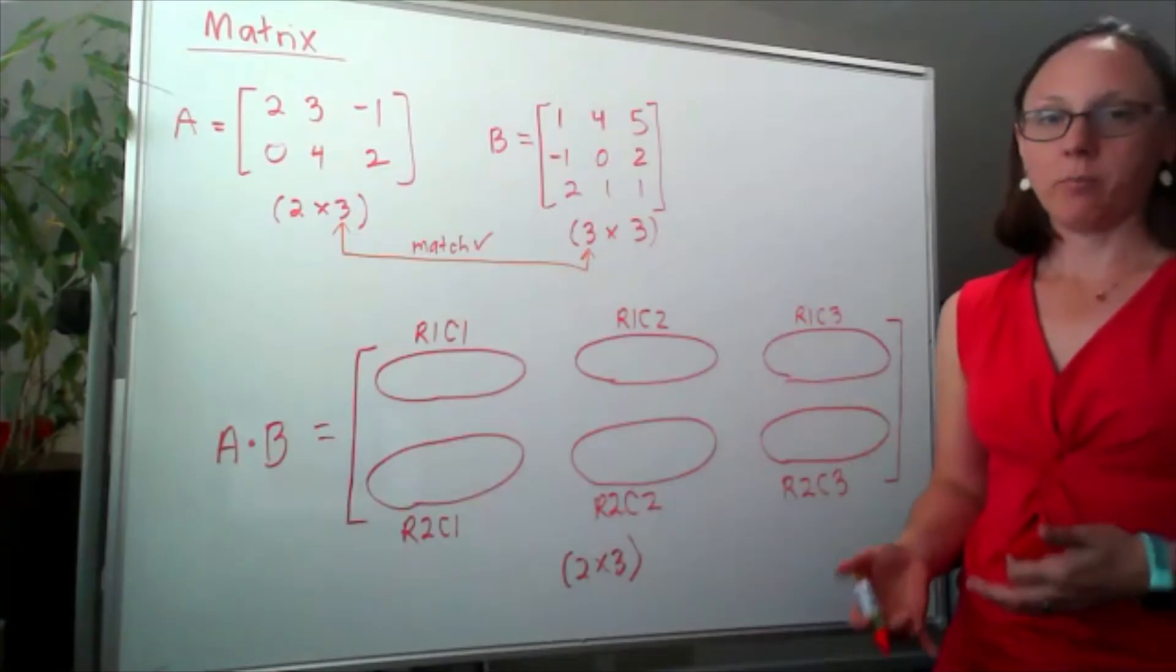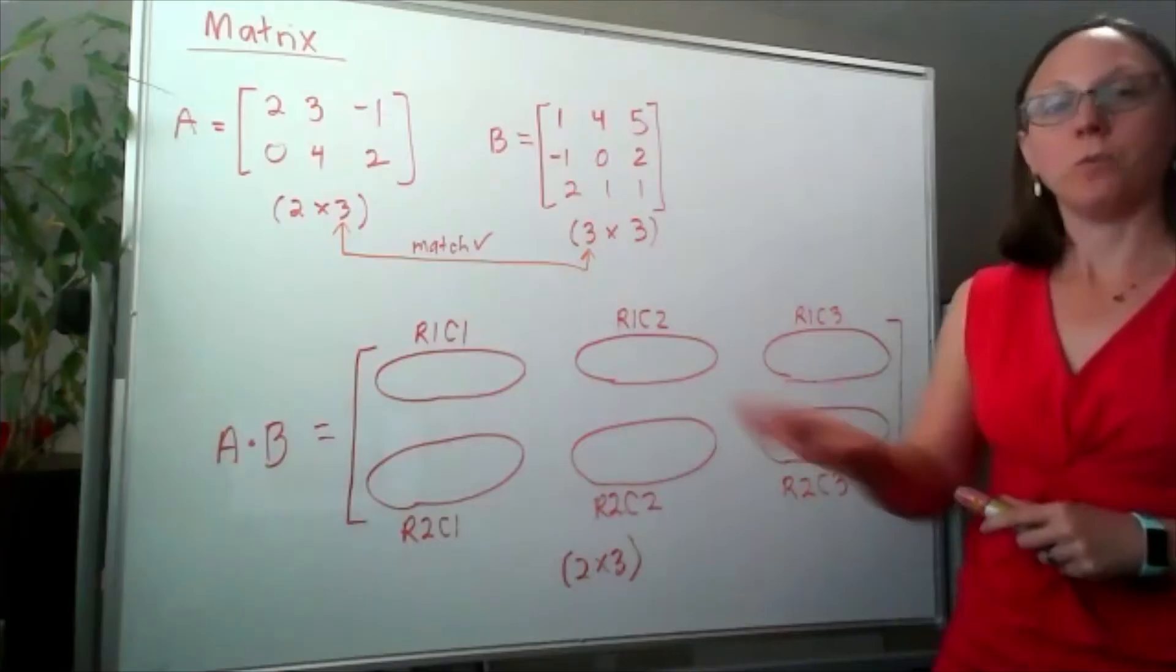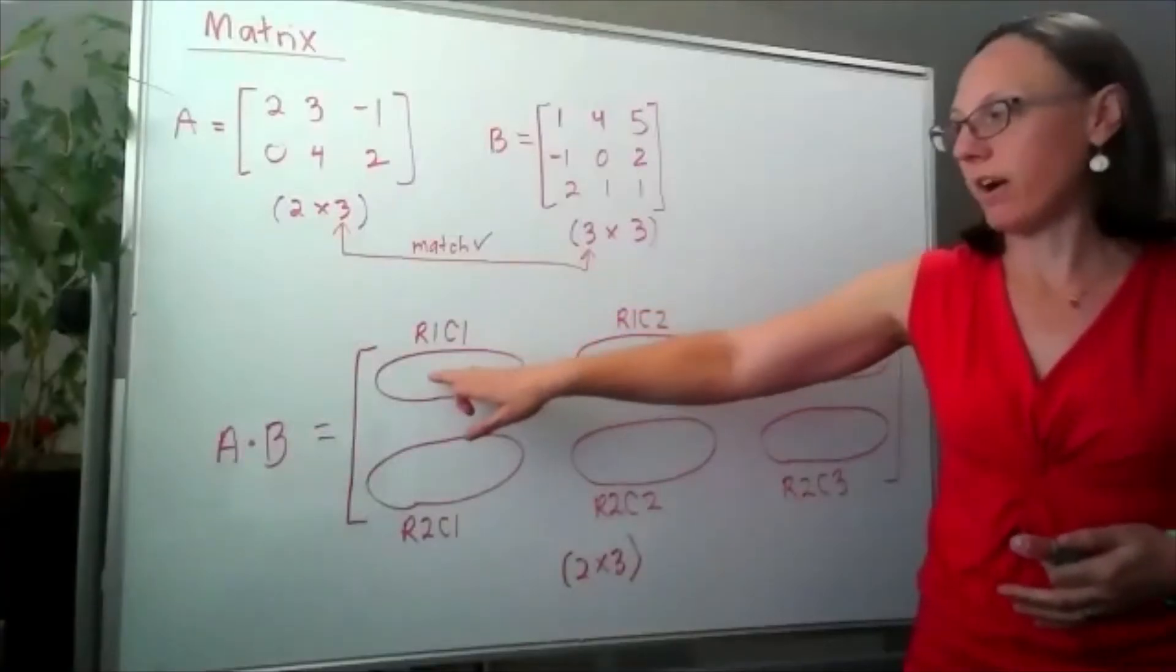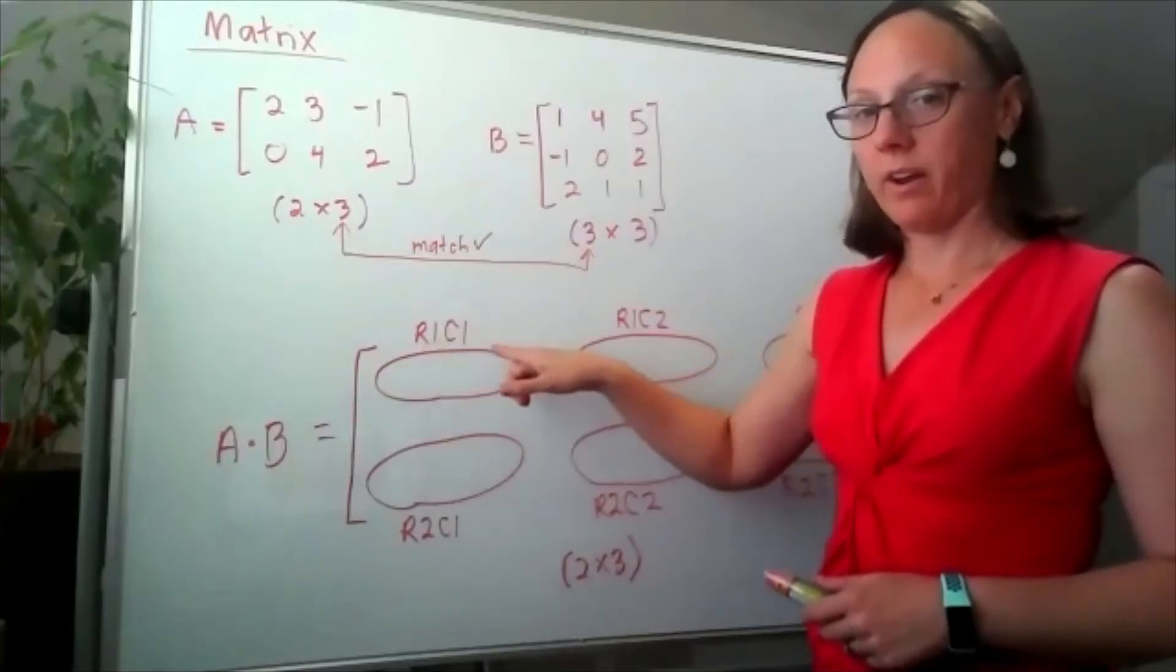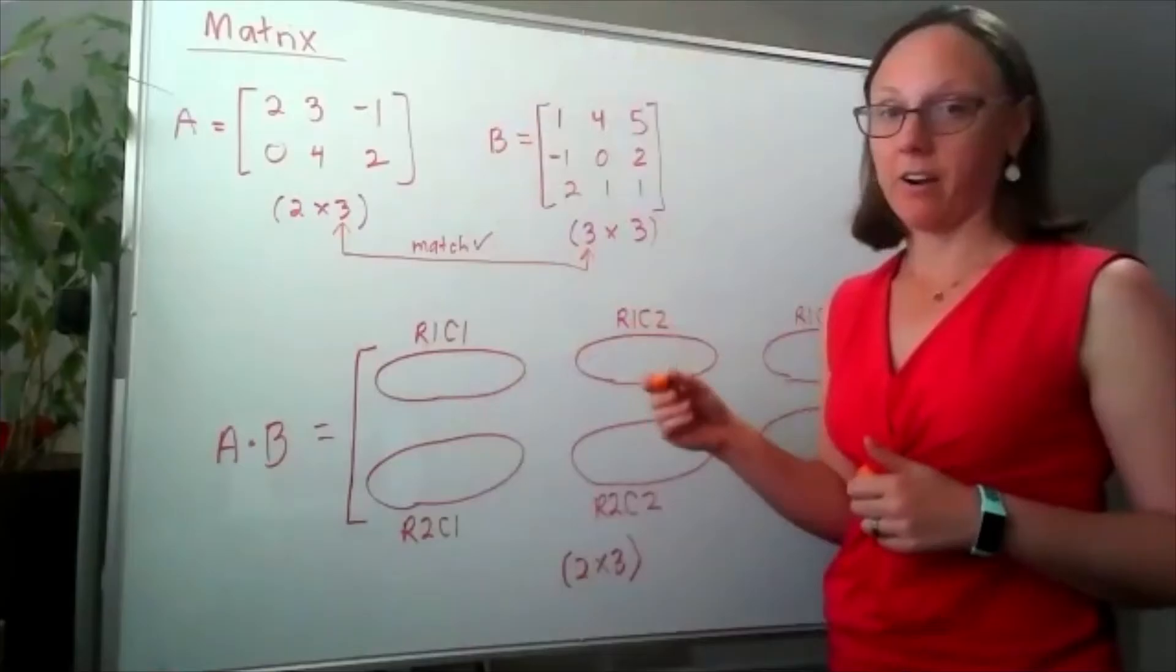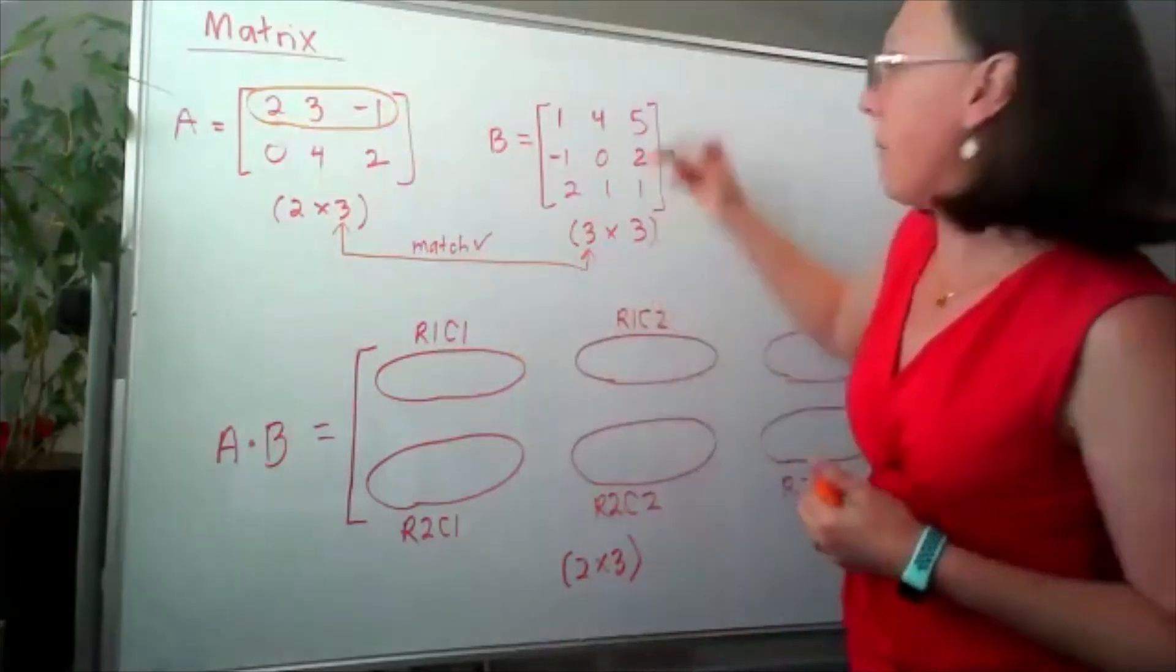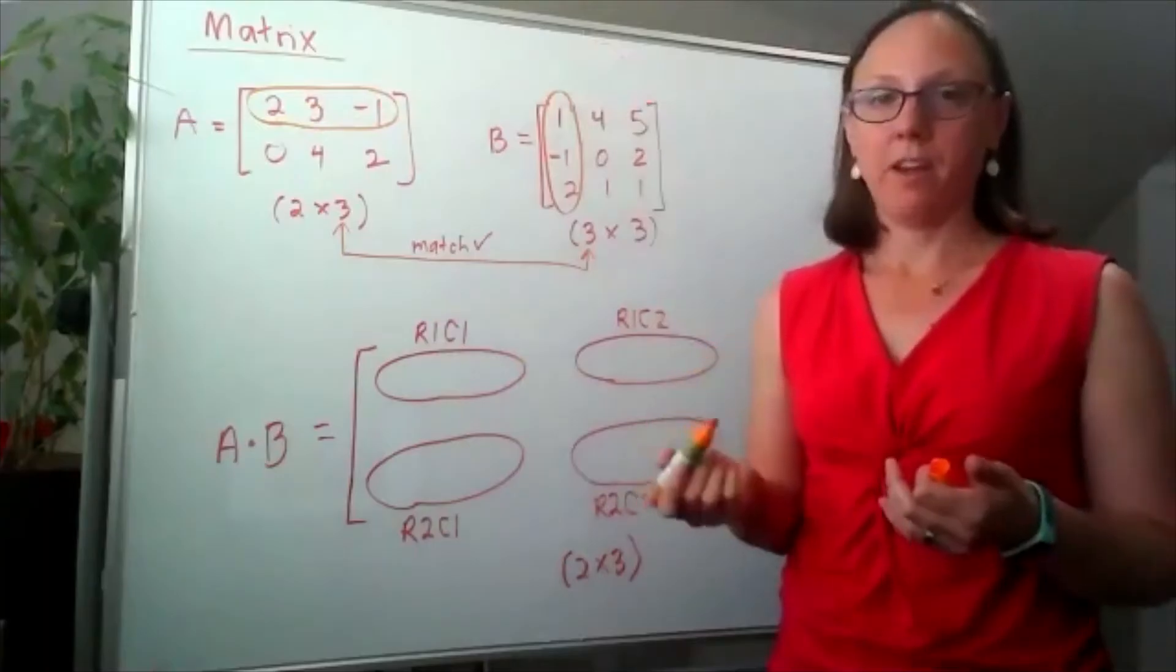When you're first starting multiplying matrices, at least for the first couple you do, I find it really helpful to actually write these out because these end up being the instructions for what goes in that entry. So this piece is row 1, column 1, which means I'm going to get the entry here by taking row 1 from our matrix A and multiplying that by column 1 of matrix B.